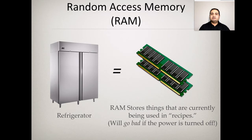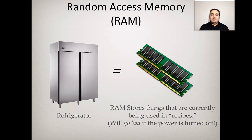Another type of primary storage is RAM — random access memory. When working on a program, the computer first looks in cache, then RAM, and if the data is not there, it goes to secondary storage — the hard drives. RAM stores things currently being used, like a refrigerator. If the power goes out, the food spoils; similarly, any data stored in RAM is lost when your computer powers off. That is the key difference between RAM and a hard drive.